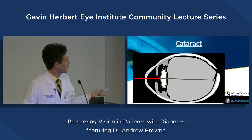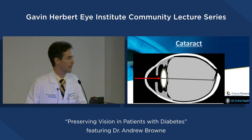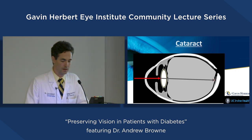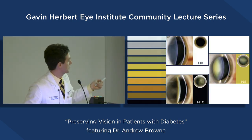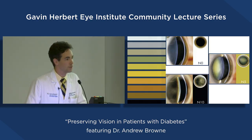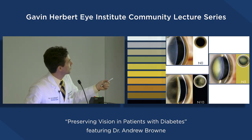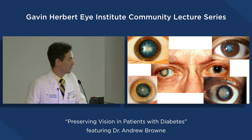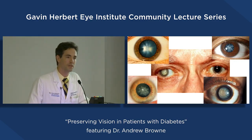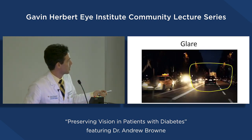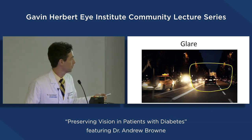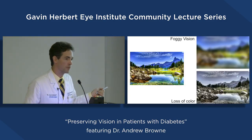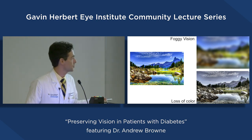With cataracts, light normally enters the eye easily to reach the back, but as the lens becomes more opaque, light cannot enter. There are many different grades of cataracts, from clear to very dark. Diabetes is a disease state that accelerates cataract formation. Cataracts can make night driving terrible with glare and can turn a vibrant, colorful world into a blur or an ashen landscape with no color.